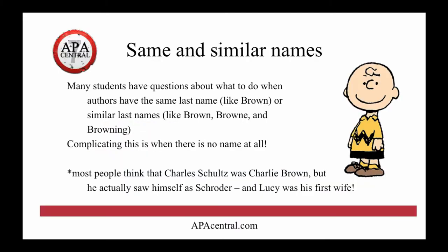What about same and similar last names? So many students have questions about what to do when authors have the same last name like Brown — that's Charlie Brown there to the right, I don't know if he writes a lot of books though — or similar last names like Brown, Browne with an E on the end of it, and Browning. And complicating all of this is when there's no last name at all.